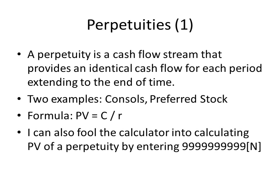The first special type of cash flow we'll discuss is called the perpetuity — a cash flow stream that provides identical cash flows in each period extending to the end of time; in other words, it goes on forever. The British and Canadian governments have sold bonds called consoles where you make a lump sum investment up front and receive a perpetual cash flow stream you can leave to your heirs. People bought these hundreds of years ago and their heirs are still collecting payments today.